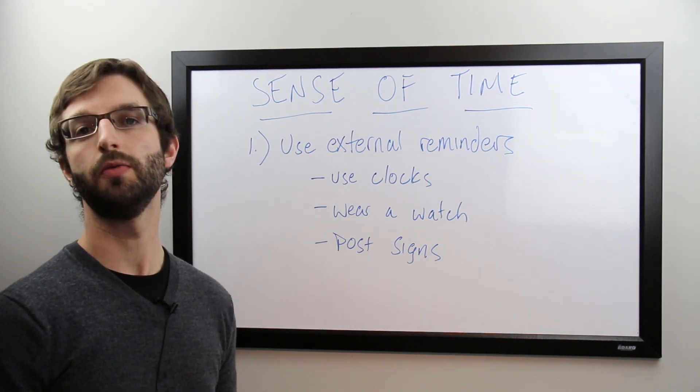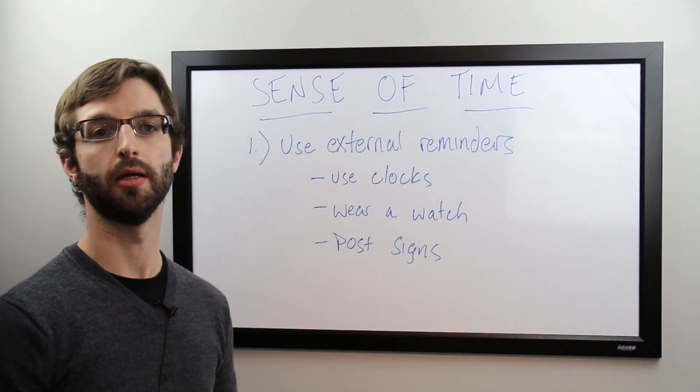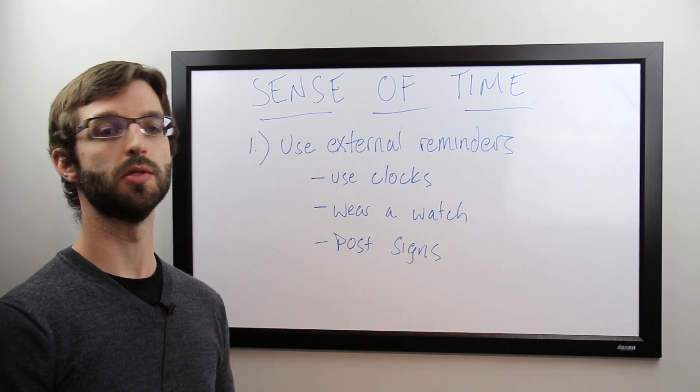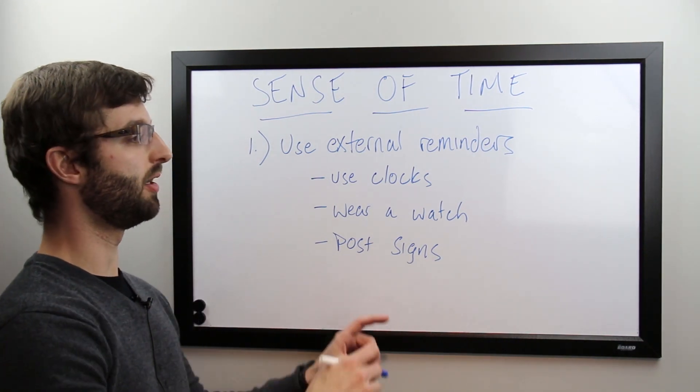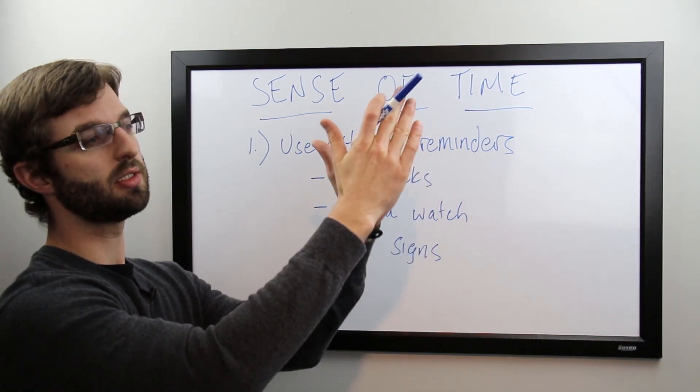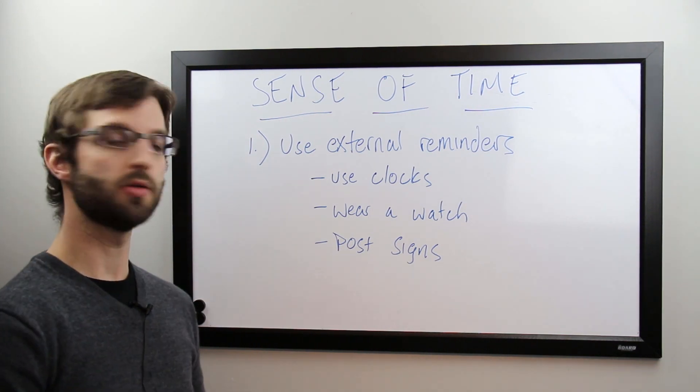Put clocks all over your house, all over your bedroom. It's a good passive reminder of what time it is and what's happening, how much time is passing. There's also some great tools you can use to help with homework. There's clocks that have a feature where you can shade part of the clock so you can actually see the passage of time as the minute hand moves. Another great strategy,